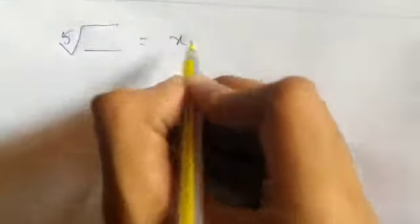5th root of some number which is equal to x. I am going to find this x. Usually, 5th root of numbers which lie between 1 to 10 we can figure out easily. Let us know how to find the 5th root of numbers which lie between 10 to 100.